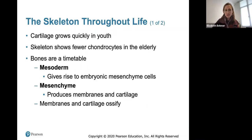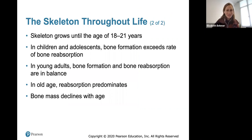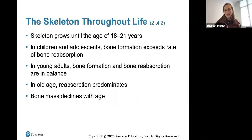Osteosarcoma is a form of bone cancer. Throughout life, the skeleton changes: cartilage grows quickly in youth and the skeleton shows fewer chondrocytes in the elderly. Mesoderm gives rise to embryonic mesenchyme cells, which produce membranes and cartilage that ossify to form bones. In children and adolescents, bone formation exceeds resorption. In young adults, formation and resorption are in balance. In old age, resorption predominates and bone mass declines.